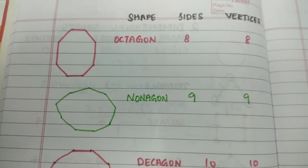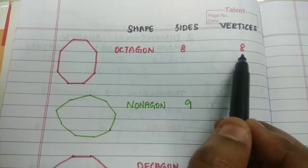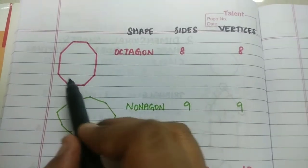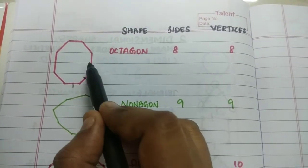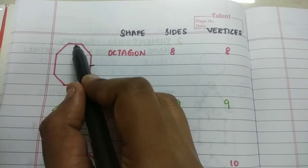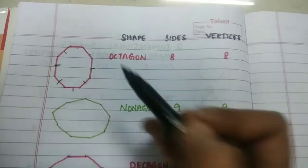The next shape is an octagon. Octagon has eight sides and eight vertices. As you can see in the figure, it has eight sides. One, two, three, four, five, six, seven and eight. And you have eight vertices.